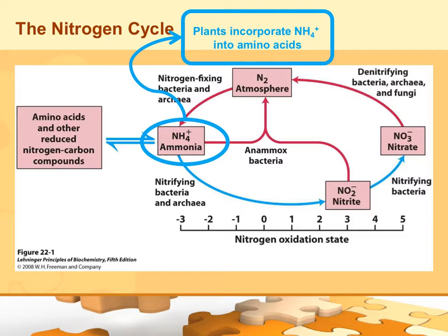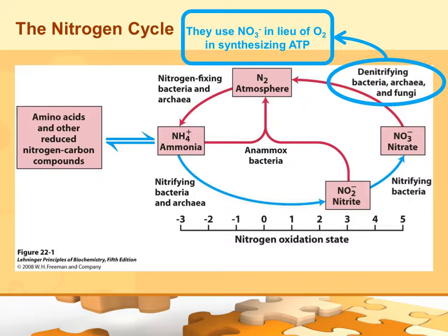As another side note, there are denitrifying bacteria and fungi. Instead of oxygen, they actually use nitrate to make ATP. Our oxidative phosphorylation pathway is tied to oxygen, but their ox-phos pathway would be tied to nitrate instead. Because of that, they can help replenish the nitrogen in the air.